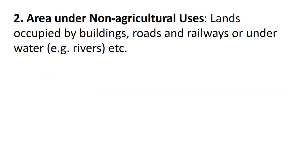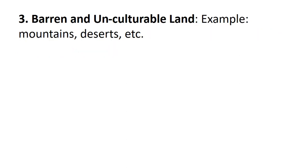The second category is land under non-agricultural uses. This includes all lands occupied by buildings, roads, railways, or underwater areas such as rivers and canals, and all other lands used other than for agriculture. The third category is barren and unculturable land, which includes all barren and unculturable land like mountains and deserts — land that cannot be cultivated except at an exorbitant cost.